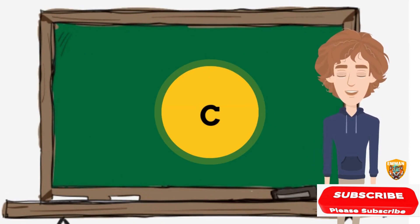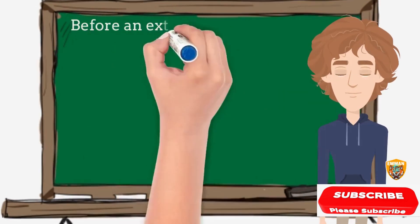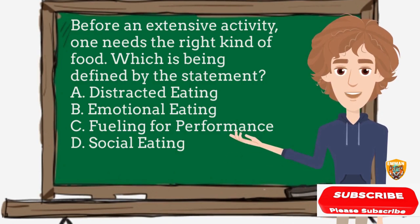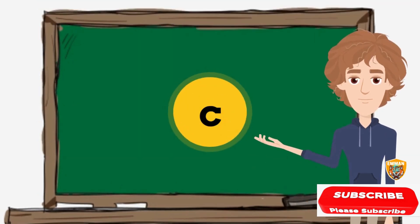We always have a good sleeping habit so that we keep our body healthy. For the last question: before an extensive activity, one needs the right kind of food — which is being defined by the statement? A) distracted eating, B) emotional eating, C) fueling for performance, D) social eating. Letter C, fueling for performance, is the best answer. It is a motto to all athletes that before they start heavy training, they must eat the right kind of food that can provide the proper fuel for their energy requirement.